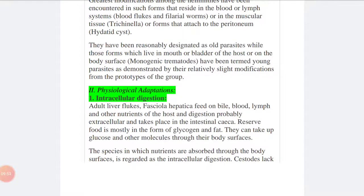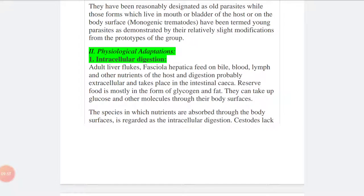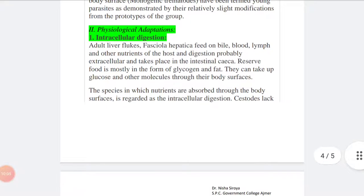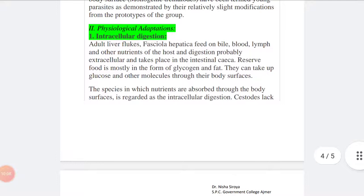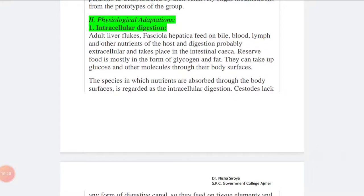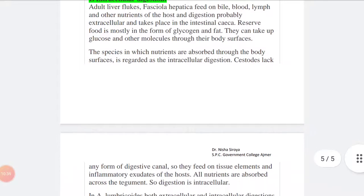The other category of changes is called the physiological adaptations. In this category, we will discuss the intracellular digestion. In the adult liver fluke, Fasciola hepatica, we know that it feeds on bile, blood, lymph, and other nutrients of the host. The digestion is probably extracellular and takes place in the intestinal cecum. Reserve food is mostly in the form of glycogen and fat. They can take up glucose and other molecules through their body surface. The species in which nutrients are absorbed through the body surface is regarded as the intracellular digestion.